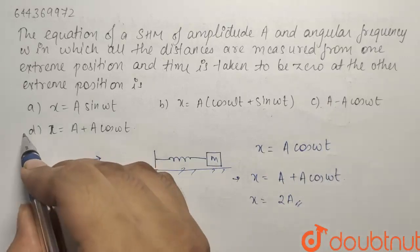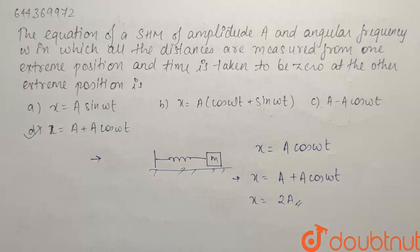So the only correct option in the given question will be option D, that is X equals to A plus A cos omega t. Thank you.